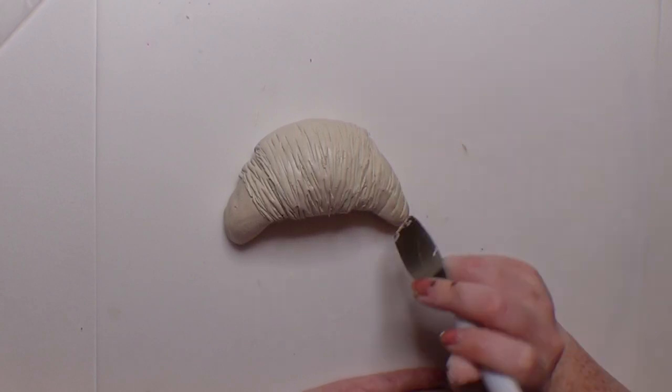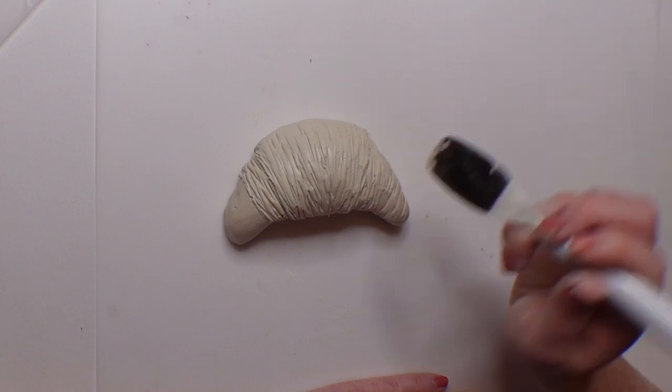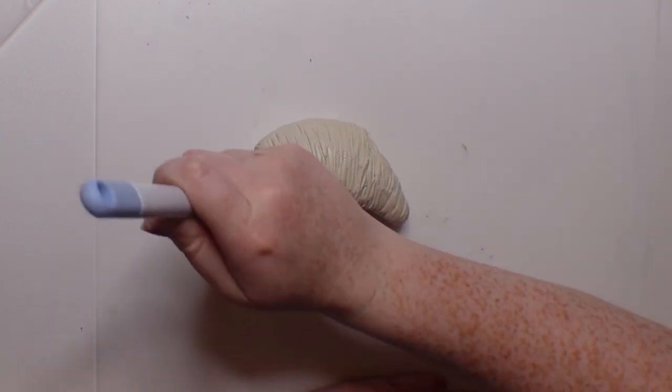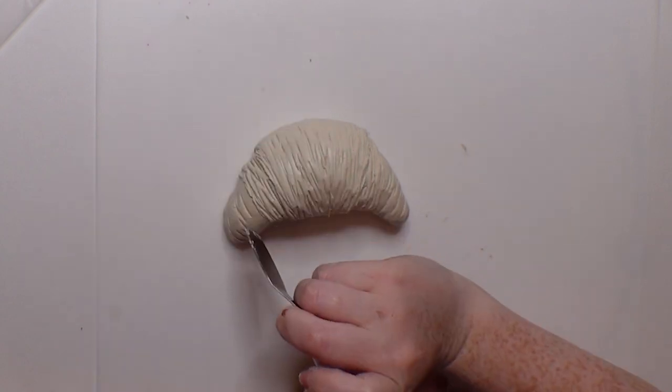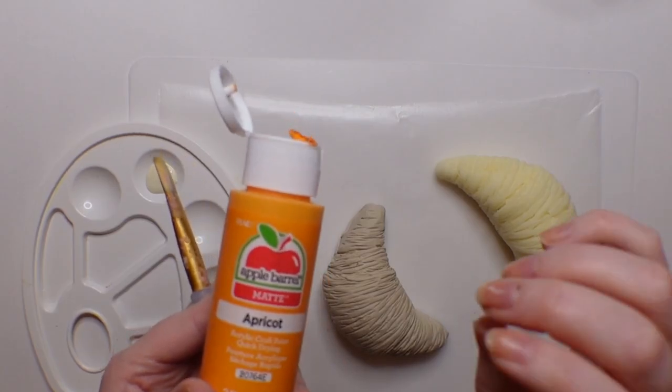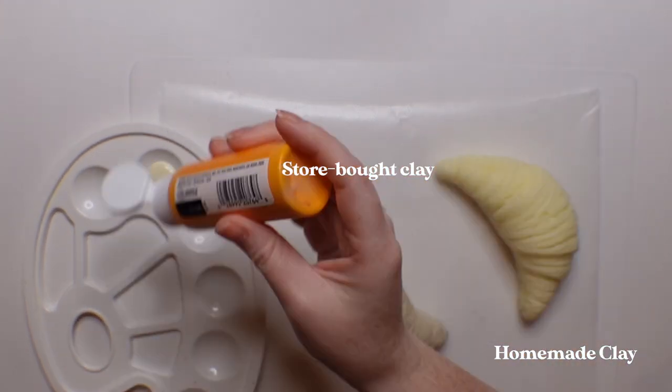Then I set both croissants to the side to dry. Now, the homemade model magic one did crack a bit, and normally that would be a bad thing, but I feel like it actually lent itself well to the texture of the croissant. Just know in general that if you do make that air-dry clay, it will be cracky.